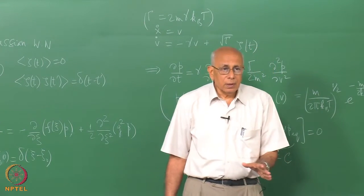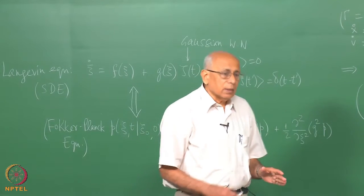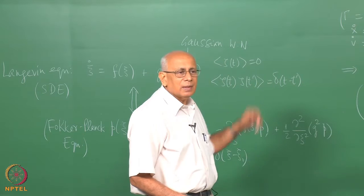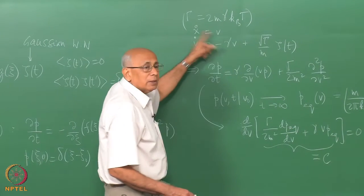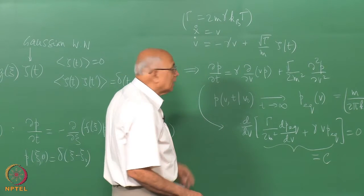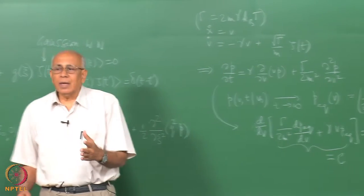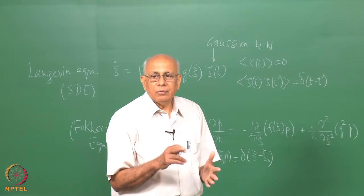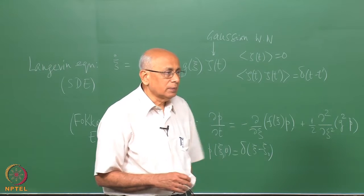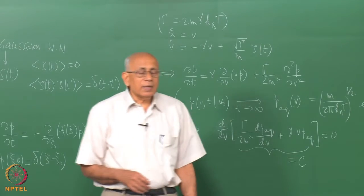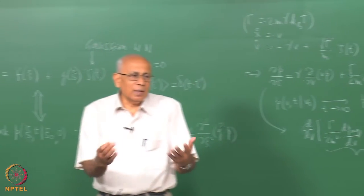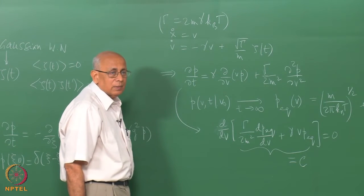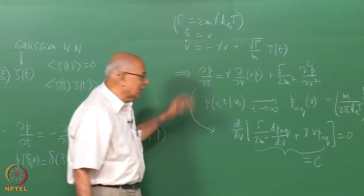Before that, let us settle whether the diffusion limit follows from this. We know the mean square displacement goes like 2Dt with D equals k_B T over m gamma in the diffusion regime. Can we derive that from this? The answer is yes. In the diffusion regime the velocity correlation time is gamma-inverse, and we are working at t much greater than gamma-inverse. One way to implement this is to take gamma to be so large that gamma-inverse is negligible, and look at the high friction limit.